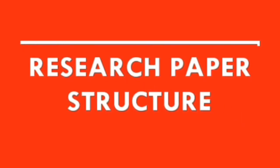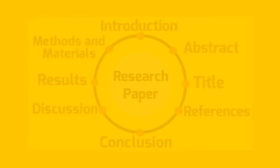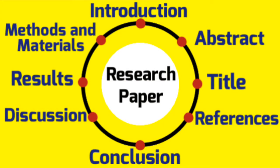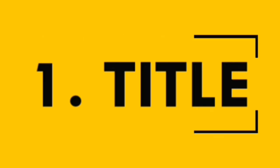Structure of a research paper: most research papers consist of the following components. Title — the title of the research paper should be simple and specific, as short as possible, and express the content so that the reader can get a good idea of the research from the title.